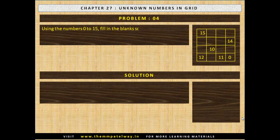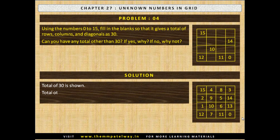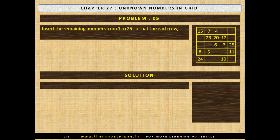Problem 4. Using the numbers 0 to 15, fill in the blanks so that it gives a total of rows, column and diagonal as 30. Can you have any total other than 30? If yes, why? If no, why not? Now stop the video and solve the problem. A total of 30 is shown; a total other than 30 is not possible. Problem 5: Insert the remaining numbers from 1 to 25 so that each row, column and diagonal totals to 65. Now stop the video and solve the problem. The solution is shown.